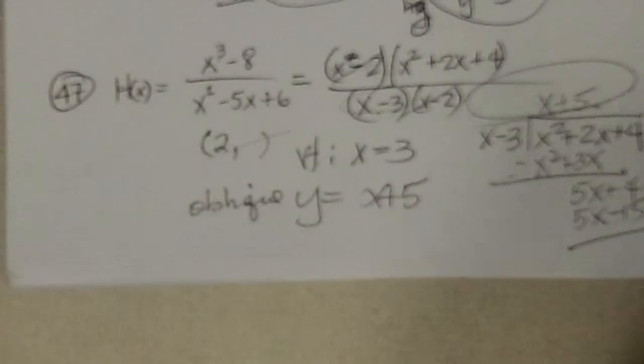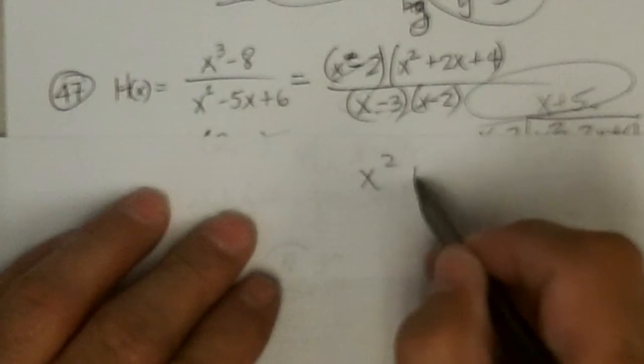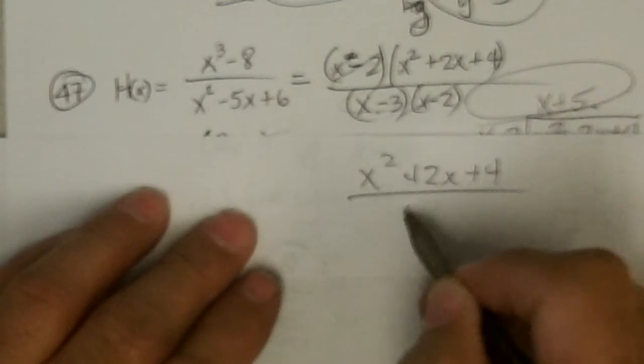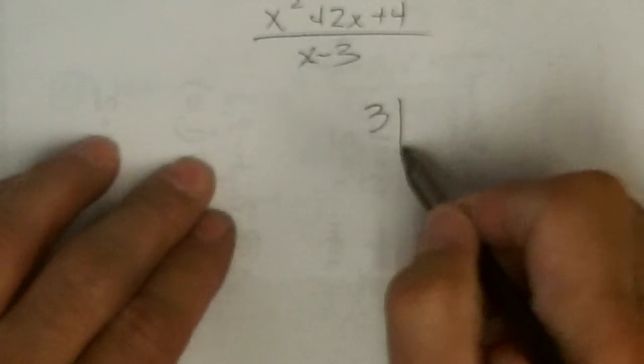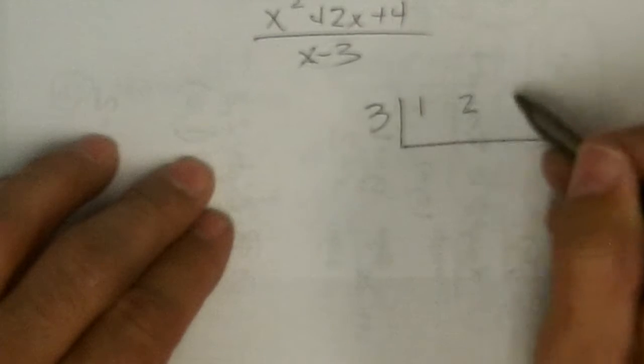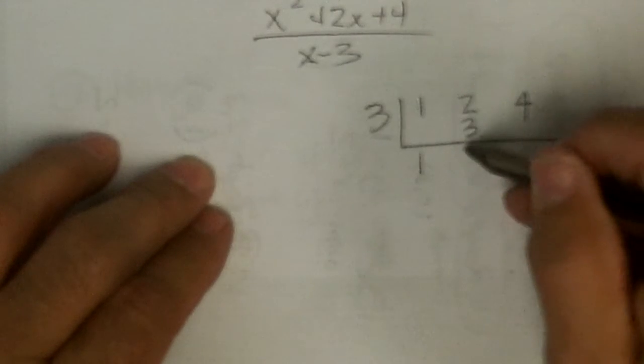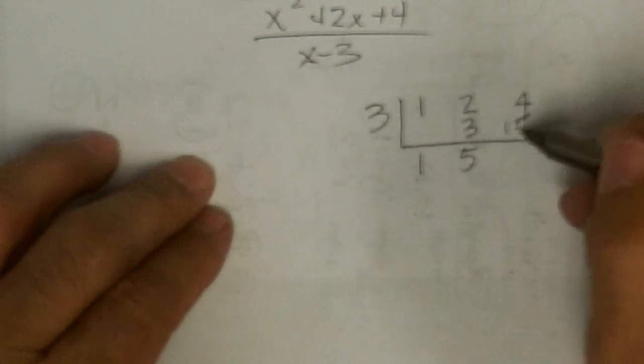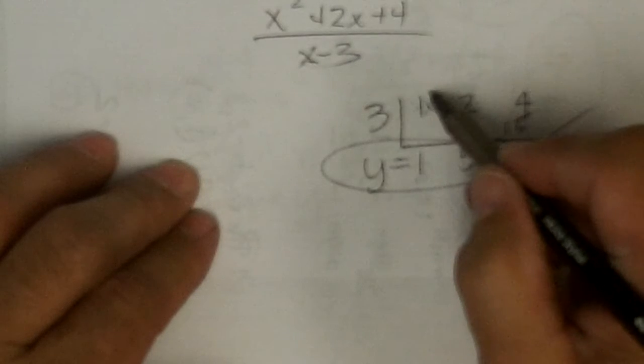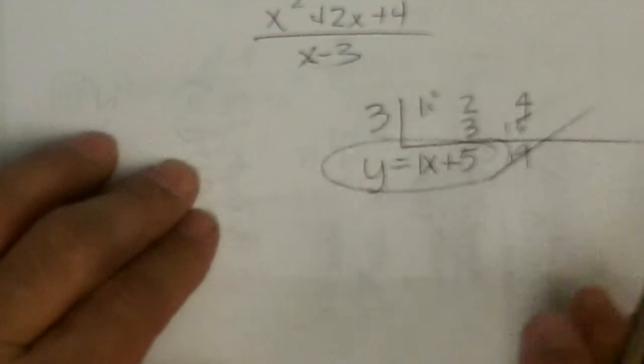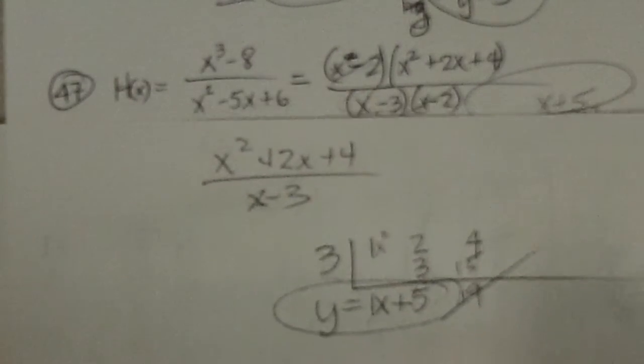So now I could have also done synthetic division on that last part, since I knew it reduced to this over that. I could have said 3 is what this is, 3 into 1x squared, 2x plus 4, 1 plus 0 is 1, times 3 is 3, 2 plus 3 is 5, 3 times 5 is 15, and I get 19, that's not 0, but I don't care, here's my oblique asymptote, y equals, this was x squared, so now it becomes 1x plus 5, same answer we had here. Okay.